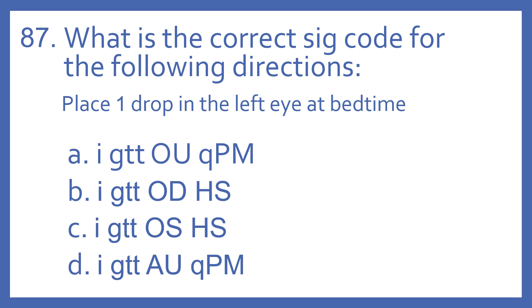Number 87. What is the correct SIG code for the following directions? Place one drop in the left eye at bedtime. A: 1-GTT-OU-QPM, B: 1-GTT-OD-HS, C: 1-GTT-OS-HS, or D: 1-GTT-AU-QPM.